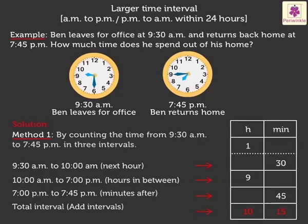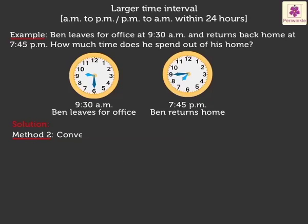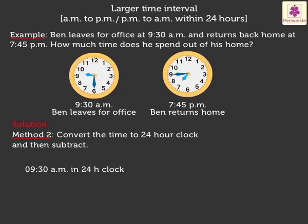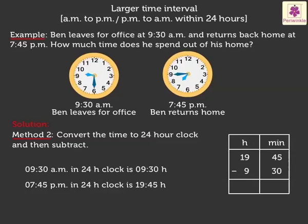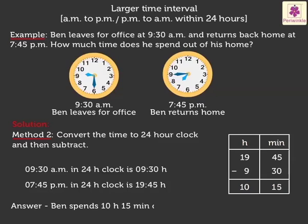Now, let's solve the example with method 2, i.e. convert the time to the 24-hour clock and then subtract. Firstly, convert 9.30am to the 24-hour clock time, which is 0930 hours. Now, convert 7.45pm to the 24-hour clock time, which is 1945 hours. Now, subtracting the starting time of the activity from the ending time of the activity gives us the time interval. Thus, on subtracting, we get the answer as 10 hours, 15 minutes. Ben spends 10 hours, 15 minutes out of home.